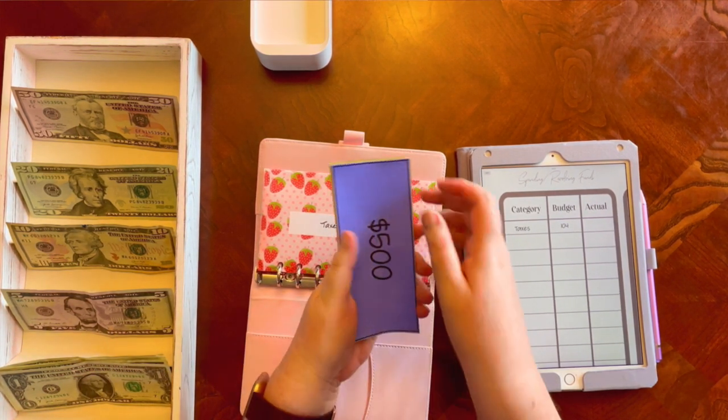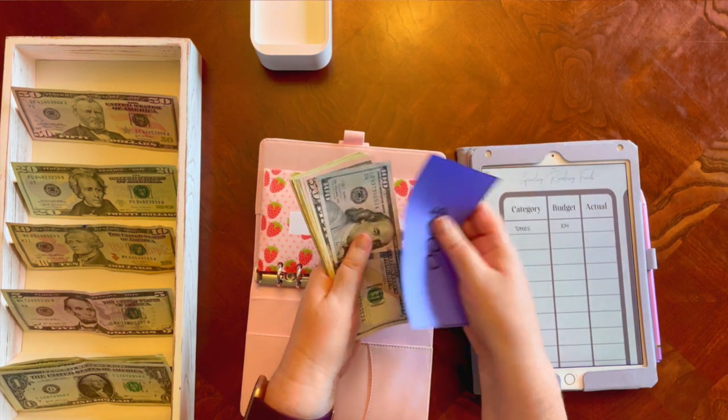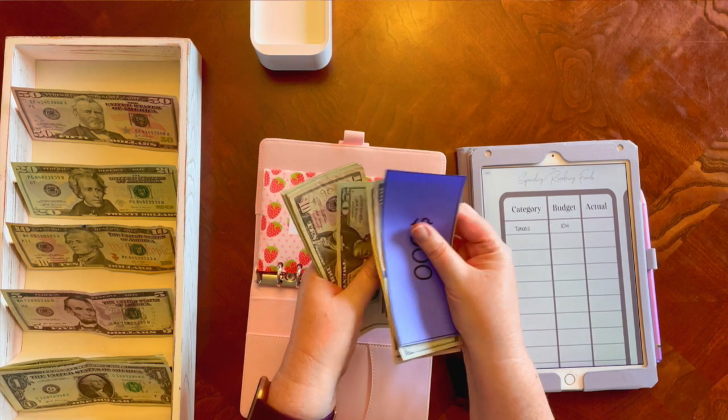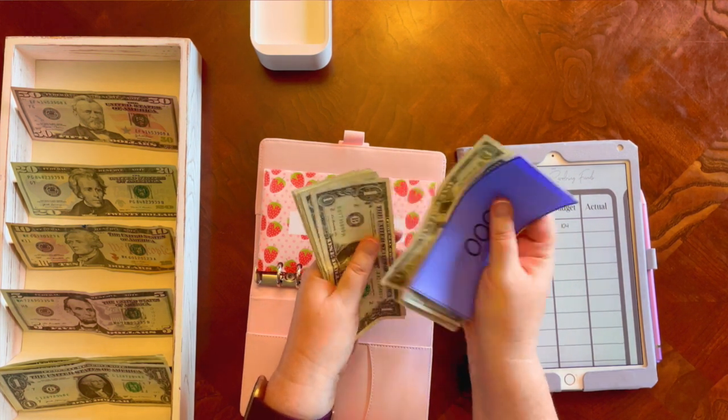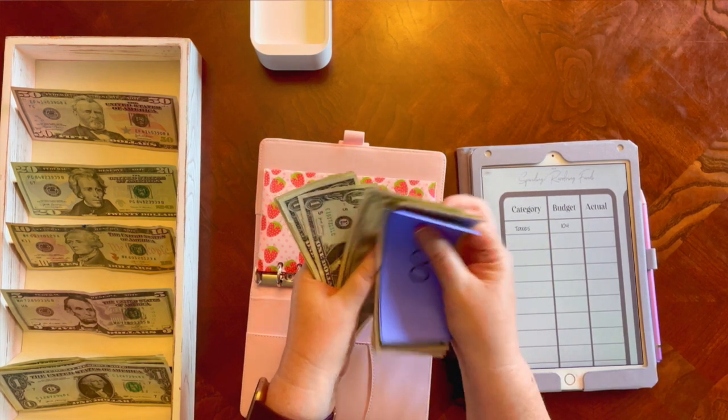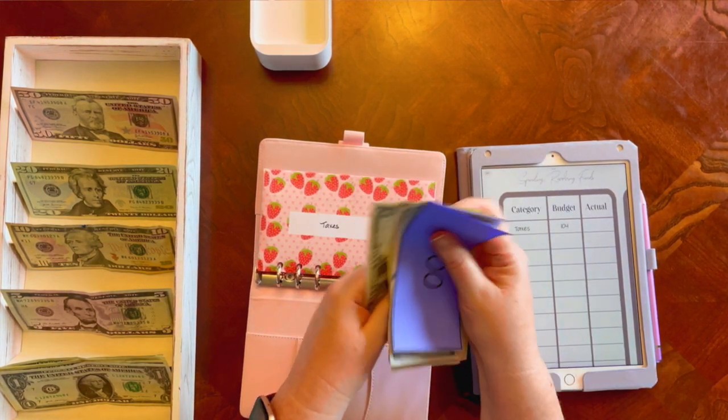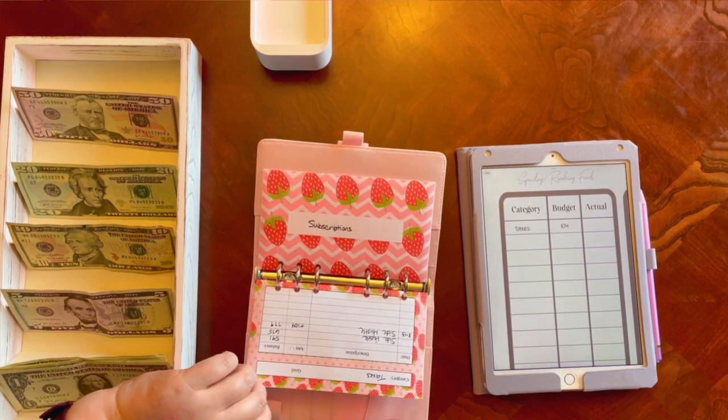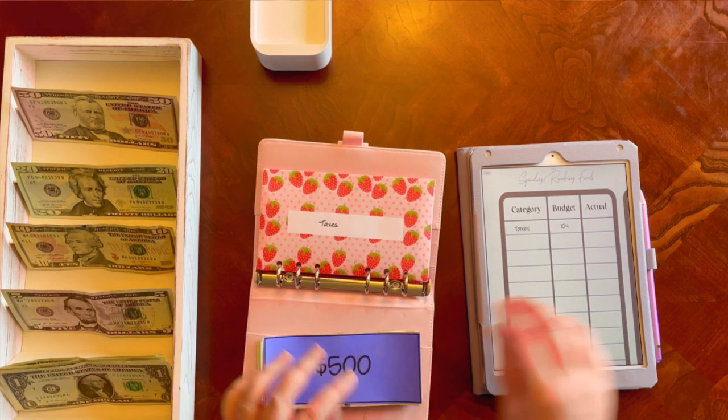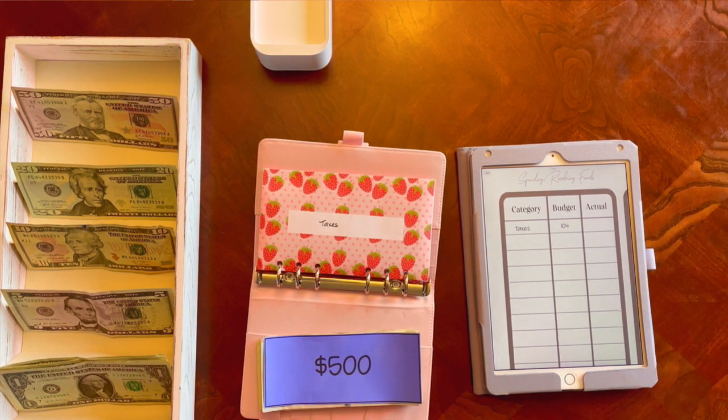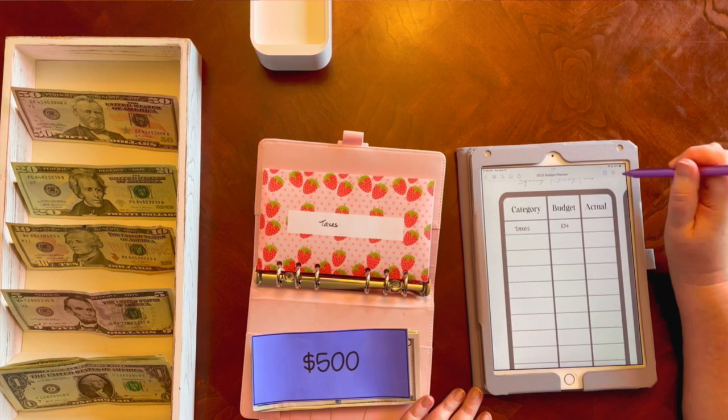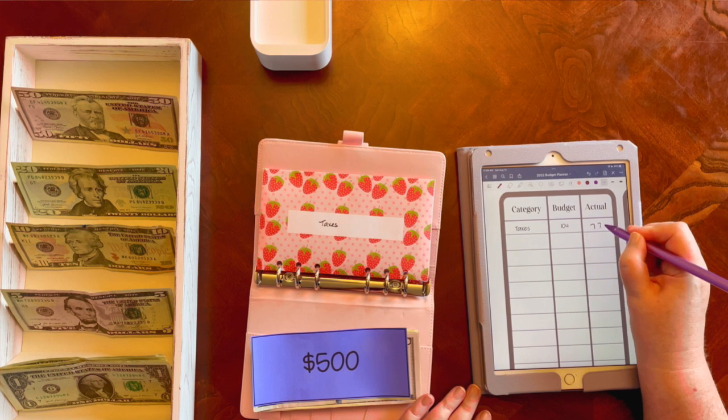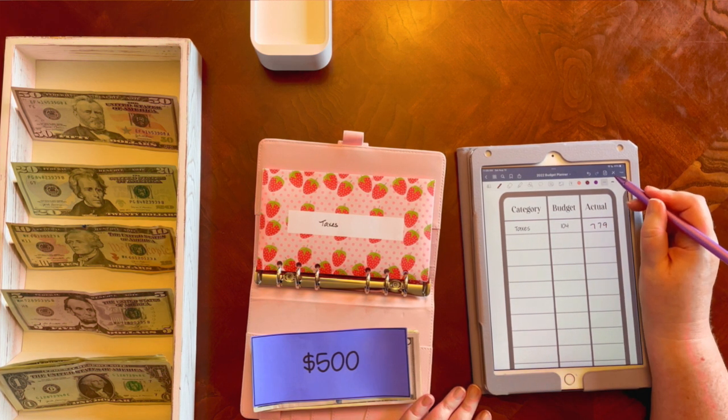Okay. So currently in taxes, I have $500 in the bank, $600, $657, $20, $40, $60, $70, $71, $72, $73, $74, $75, $76, $77, $78, $79. Oh my gosh, I lost count already. So $779 in taxes.